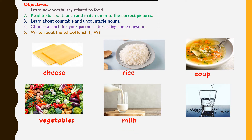Next we have milk and water. Note that there is no 'o' in the spelling of water, but the letters W-A are pronounced 'waw', so we say water. Now we have finished our new vocabulary for this lesson.